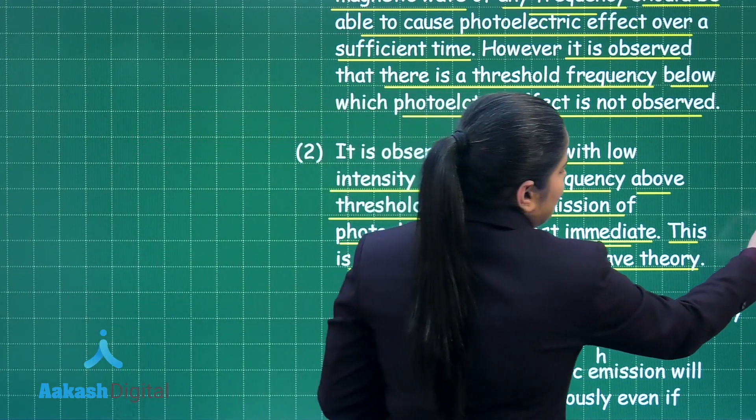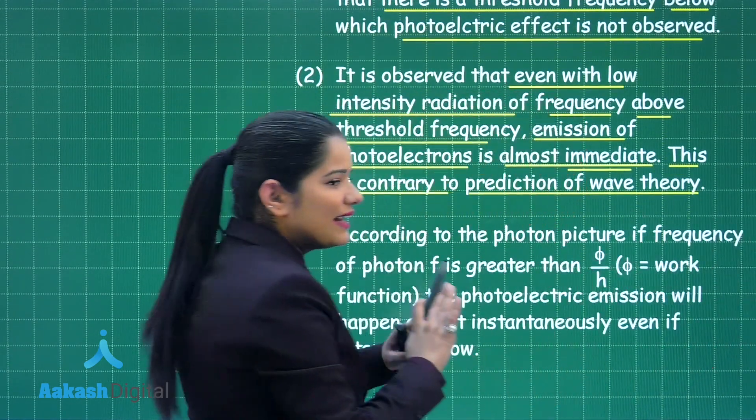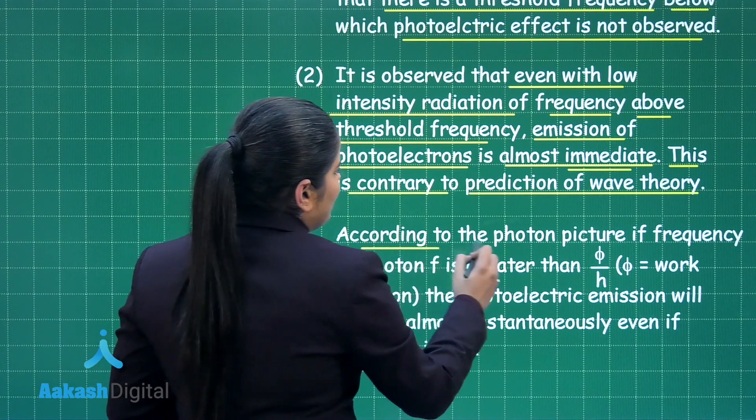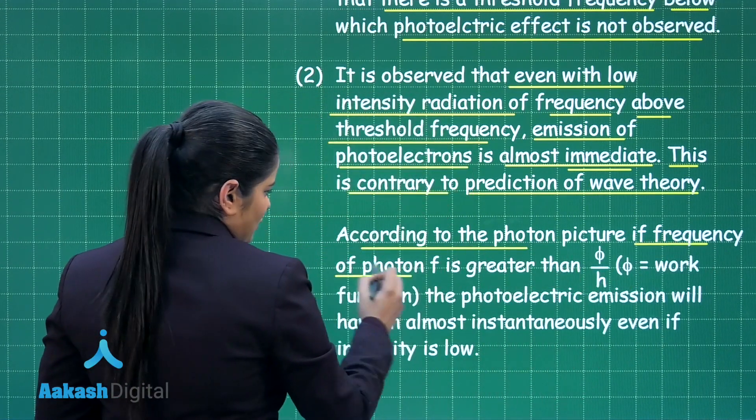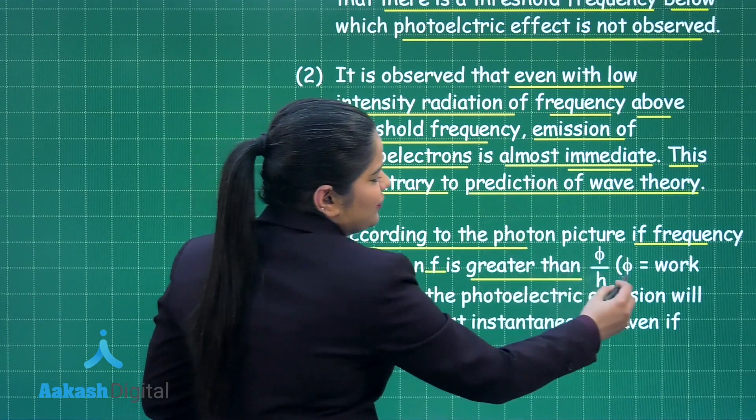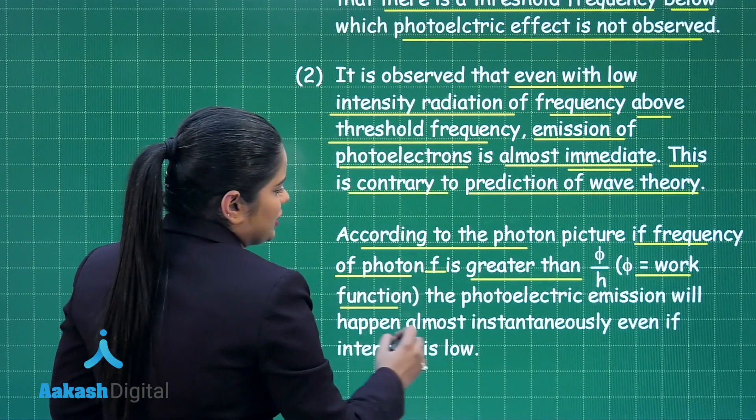Now, how does the photon picture correct or explain this effect? According to the photon picture, if the frequency of the photon f is greater than φ/h where φ is the work function,